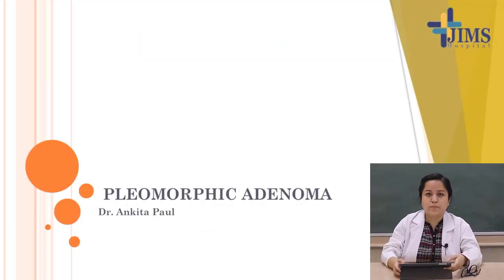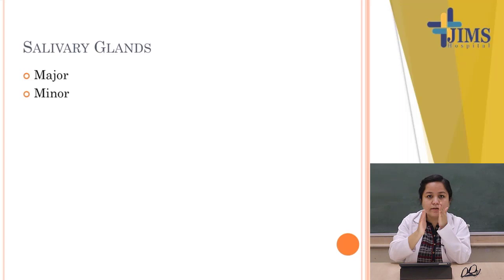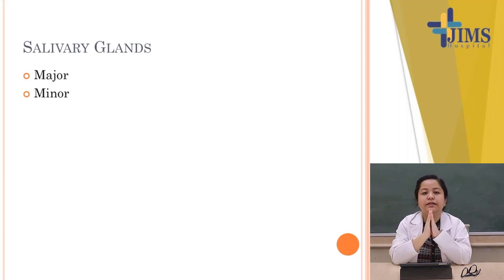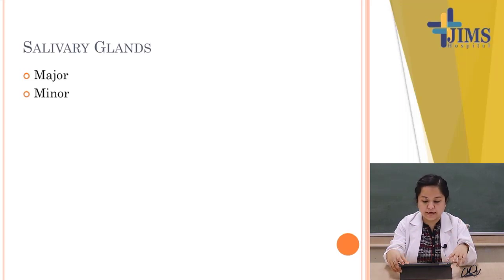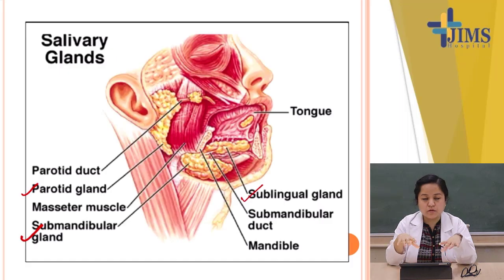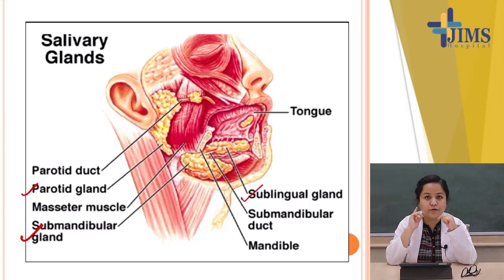Today our topic is pleomorphic adenoma. The salivary glands are divided into major and minor. Major salivary glands include three glands, and minor salivary glands are numerous. Coming to the major salivary glands, we have three: the parotid, submandibular, and sublingual.